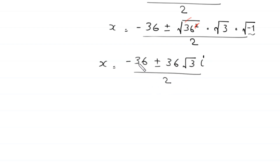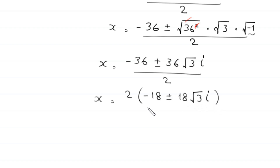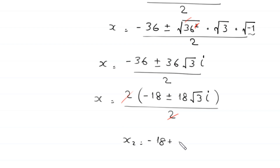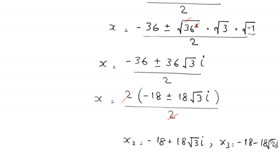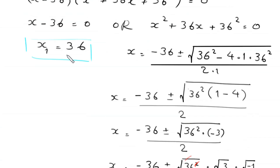From the numerator we can factor out 2, so x equals 2 times (negative 18 plus or minus 18 times root 3 times i), divided by 2. The 2 cancels out, and we get two values: x₂ equals negative 18 plus 18√3·i, and x₃ equals negative 18 minus 18√3·i. So we have three solutions: x₁ equals 36, x₂ equals negative 18 plus 18√3·i, and x₃ equals negative 18 minus 18√3·i.